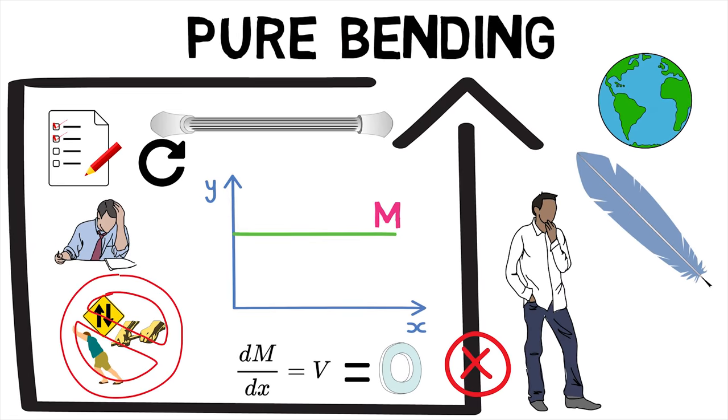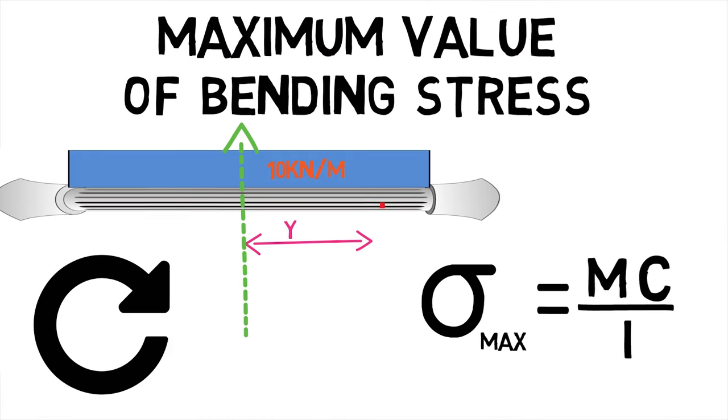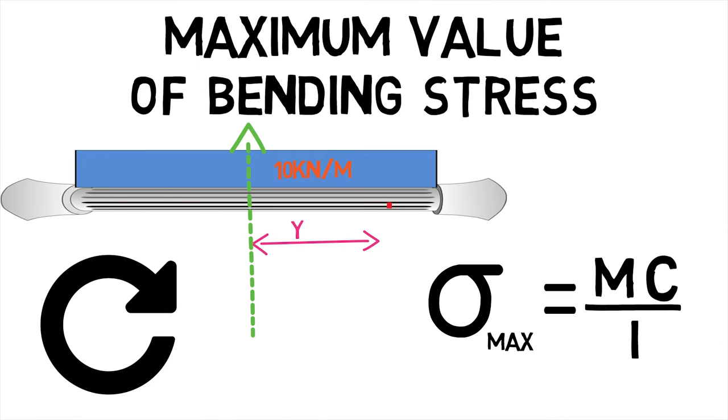We first saw what theory of pure bending is, then saw the assumptions in pure bending and finally saw what flexural formula for straight beams is.